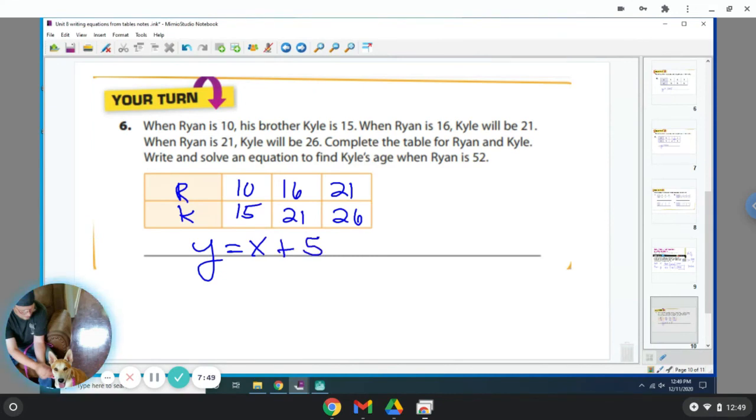So it says, write and solve the equation to find Kyle's age when Ryan is 52. So Ryan is x in this case, and Kyle's y. So we're going to plug in 52 for x. And you get y is equal to 57. So Kyle will be 57 when Ryan's 52.